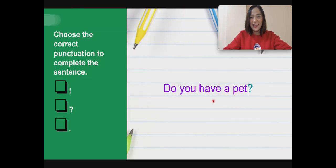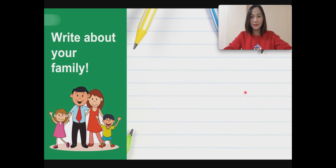It's... Yes! A question mark. That's right. Now, this sentence is correct. Do you have a pet? Great job. Great job, everybody. Everybody, you have passed the skills test.